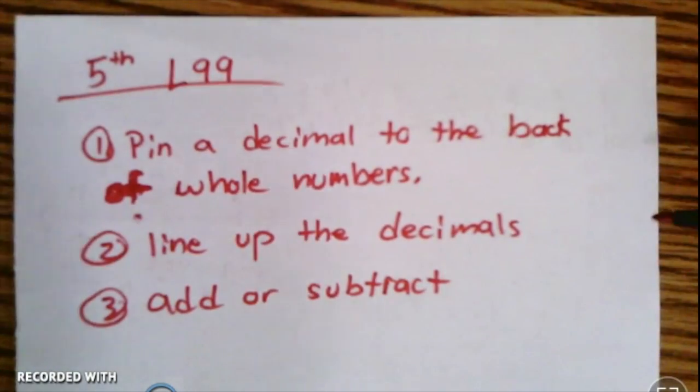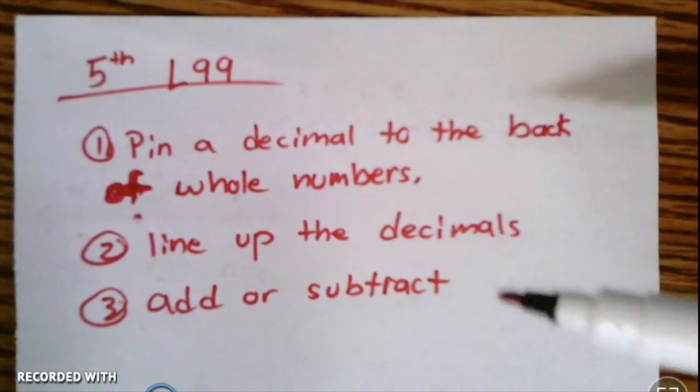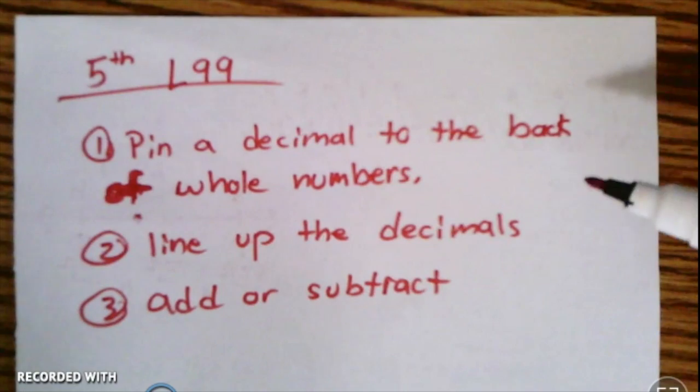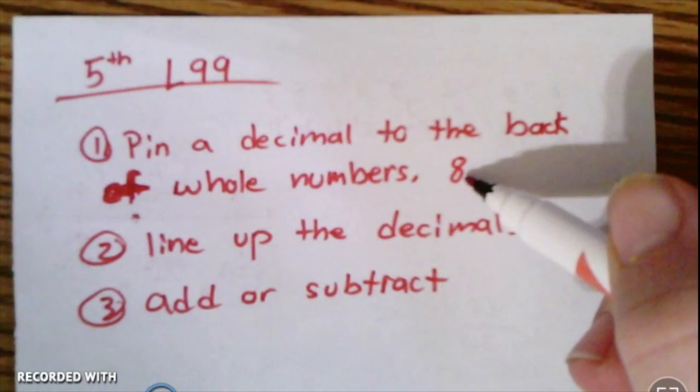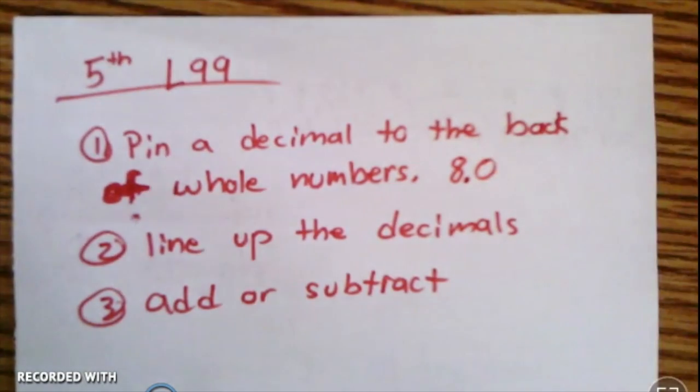Let's talk about the steps. The first step is you've got to pin a decimal to the back of a whole number. So if I had an 8 here, there's a decimal after the 8. You could write 8.0 if you wanted to.